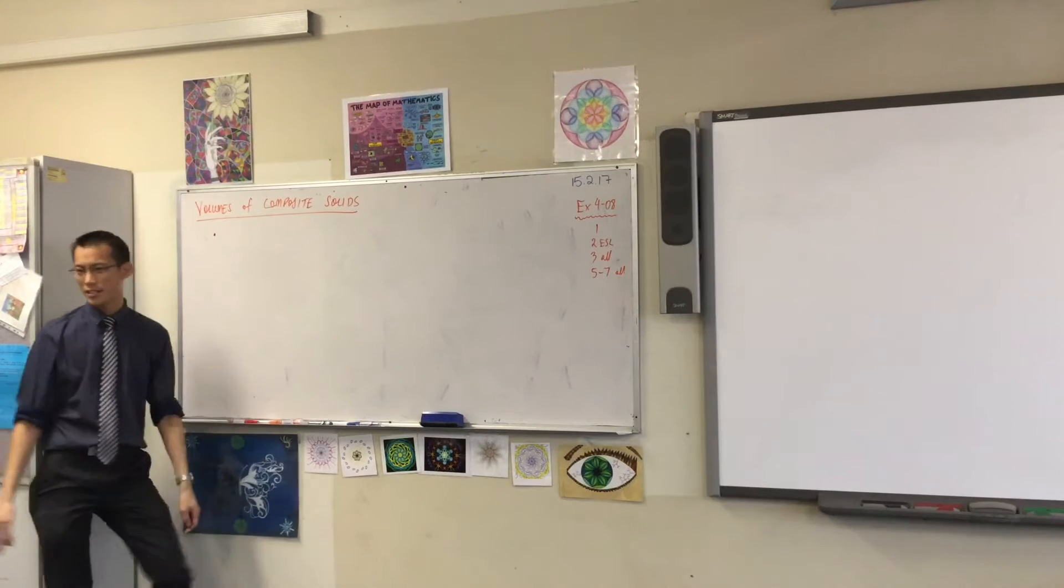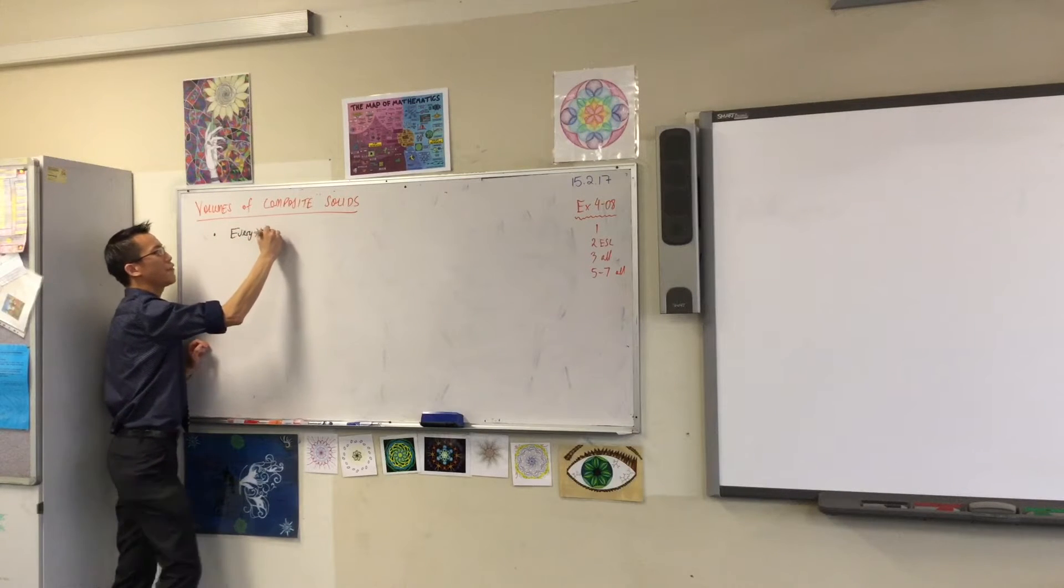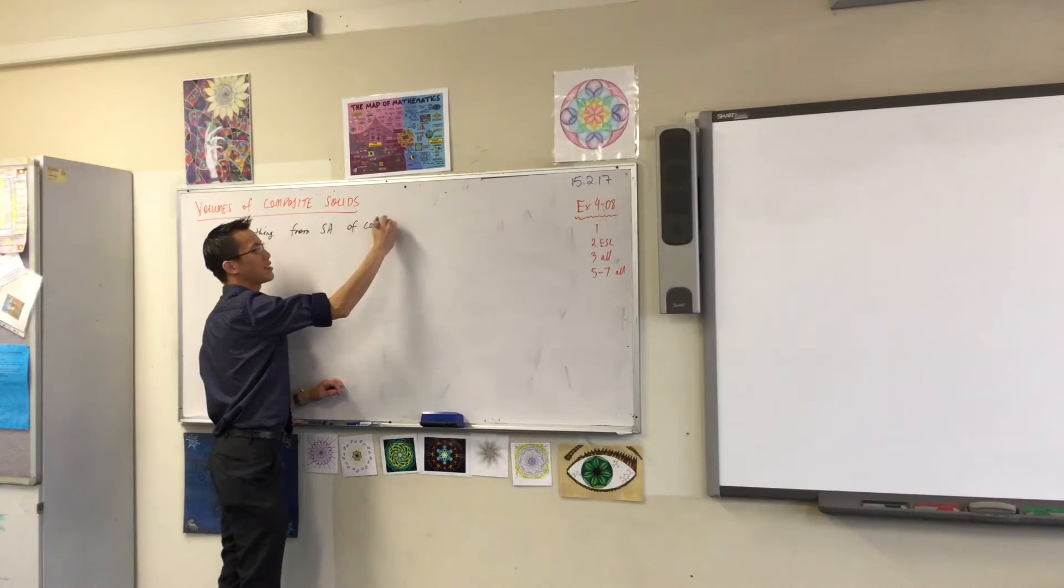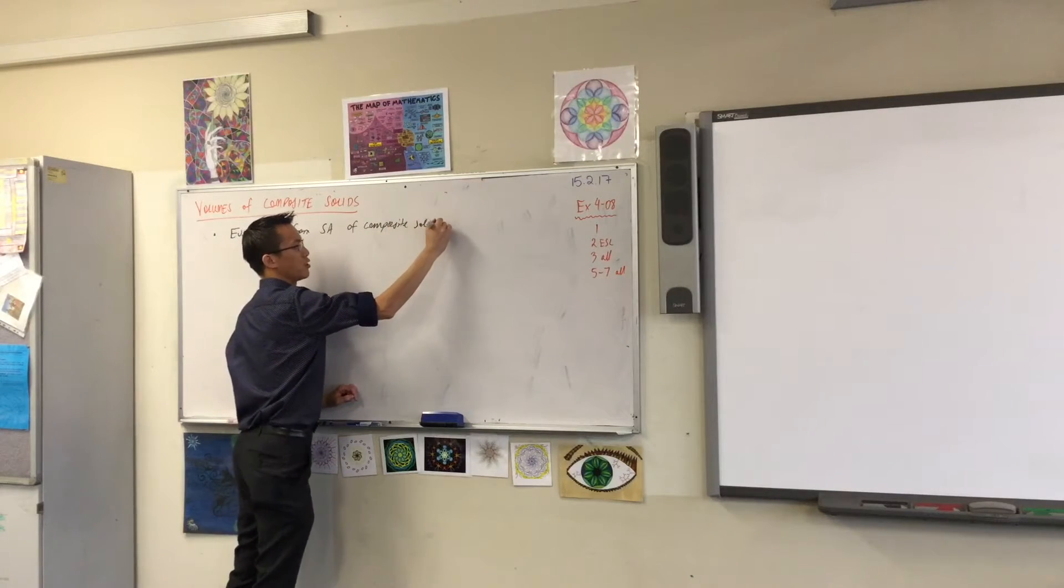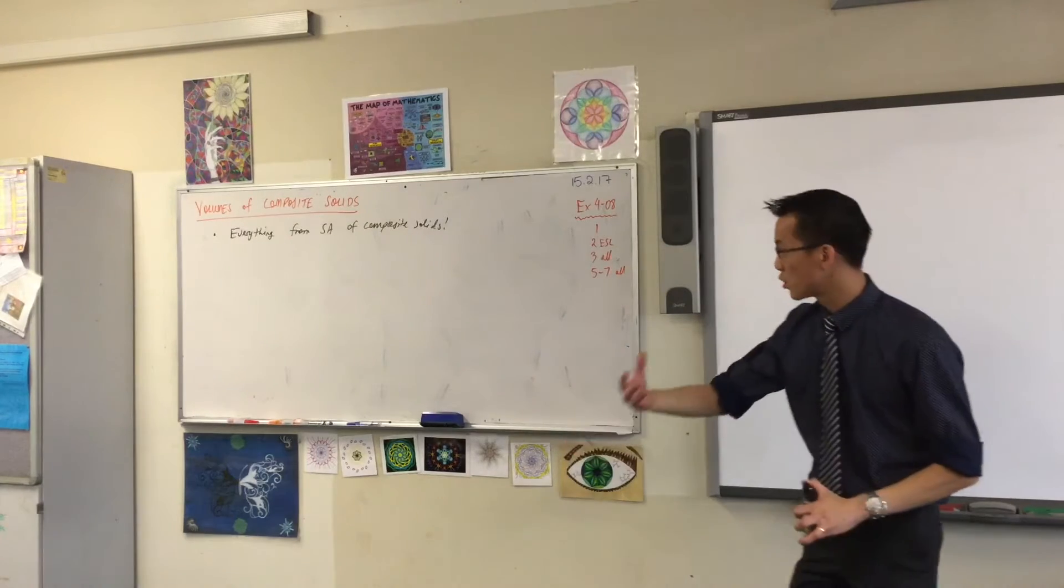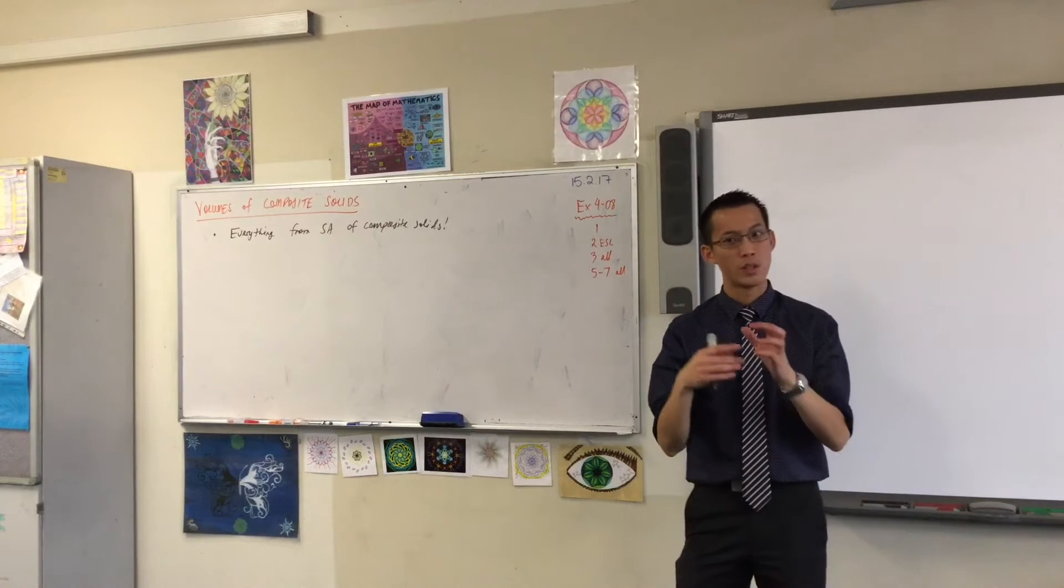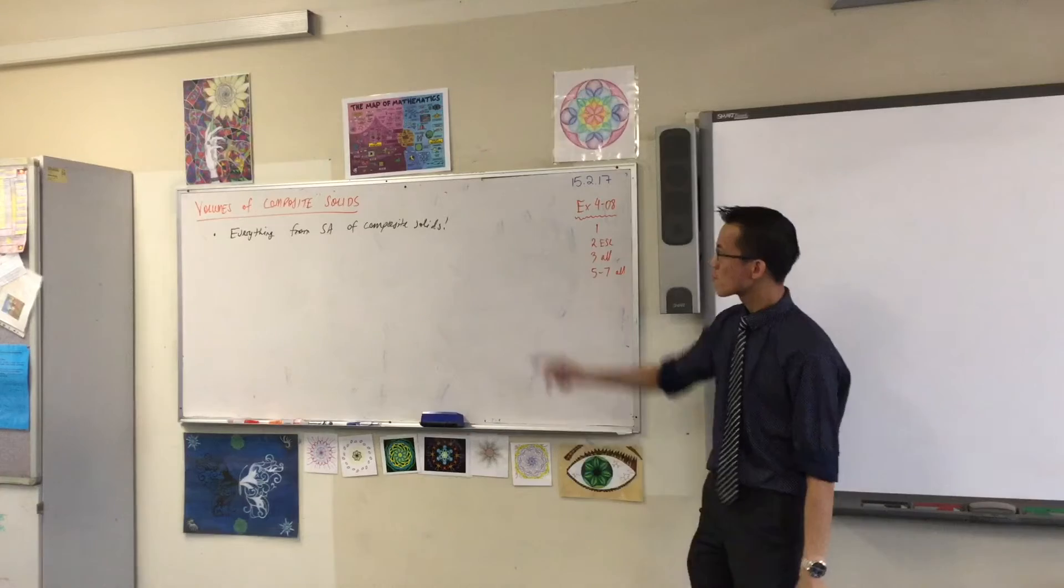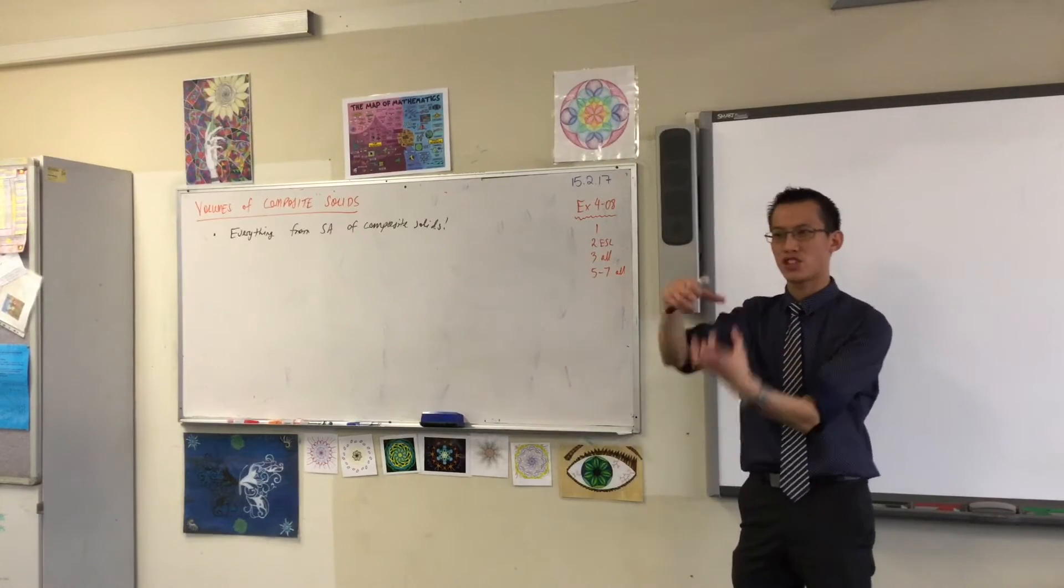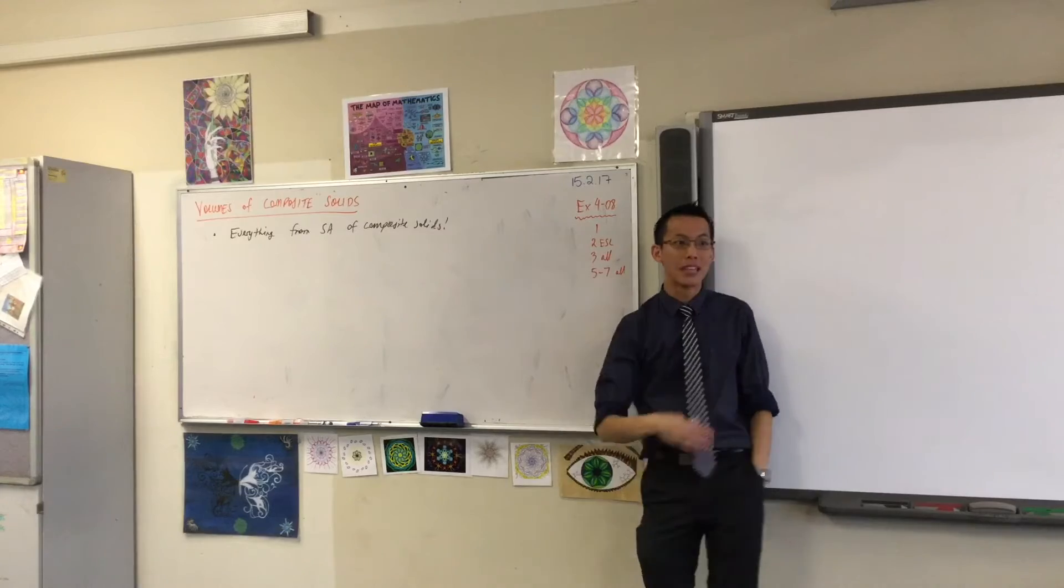The first thing I want to say about volumes of composite solids is, everything from the surface area of composite solids, everything else still applied. You should still draw a diagram. You should still label it carefully. And when you're doing the final answer, you should still identify all the components. I suppose the only difference is, because we're doing volume, not surface area, volume's not interested in faces. Volume's interested in what kind of shapes, what kind of blocks make up this thing. But the idea's the same. So number one, everything you've learnt before, let's use those principles again.